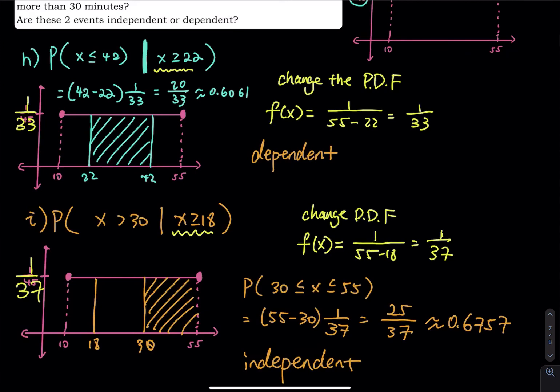That is the end of this video. I hope this helps you solve conditional probability questions when you encounter uniform distribution. If you find my instruction helpful, please subscribe, like, and share, and let me know in the comments. In the next video, I will introduce how to solve percentile problems on a uniform distribution.